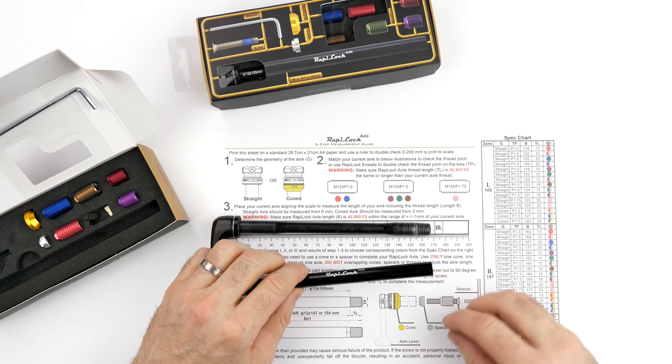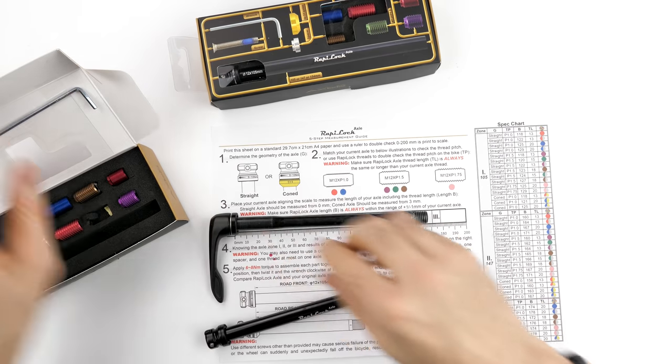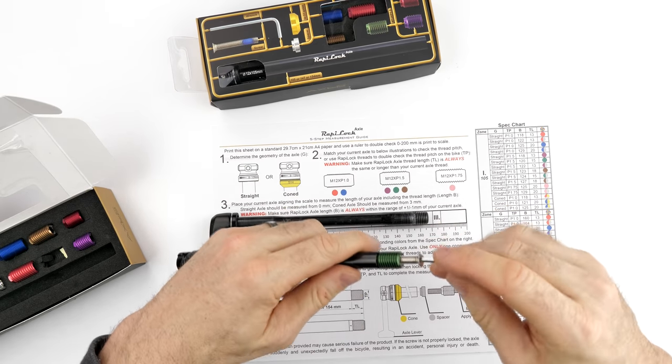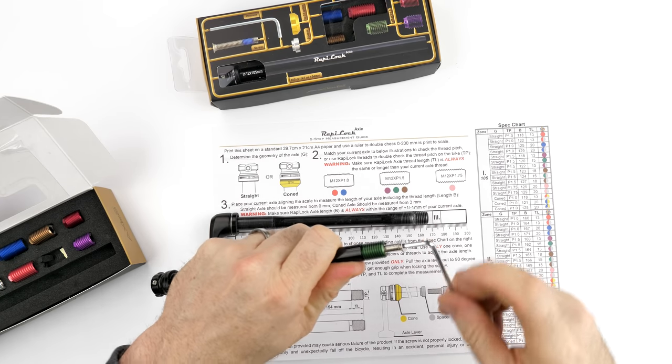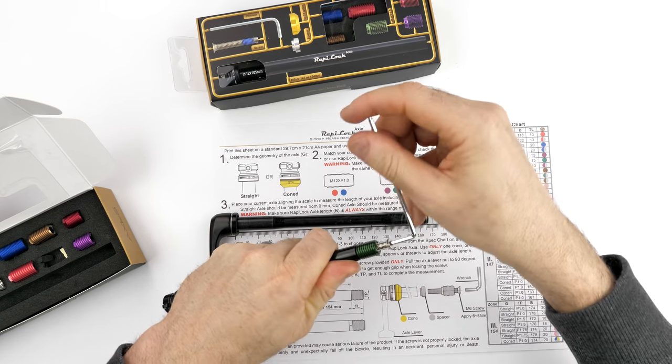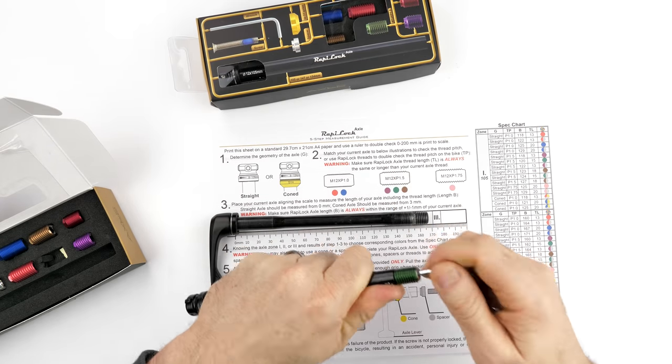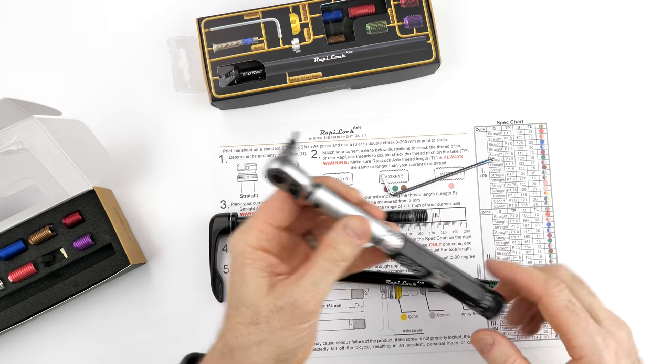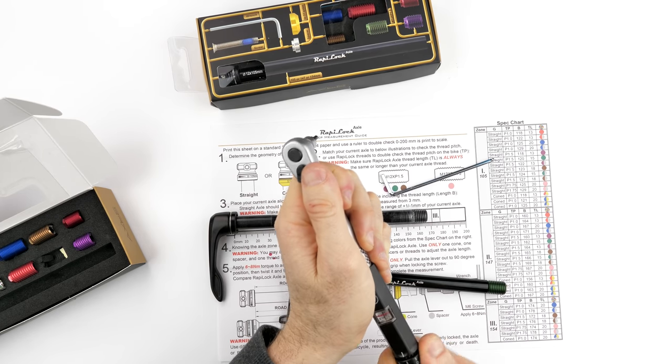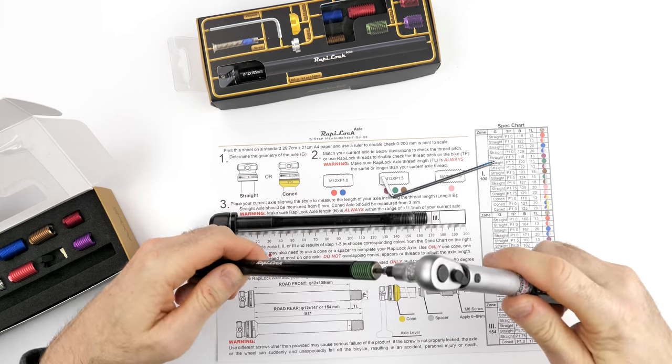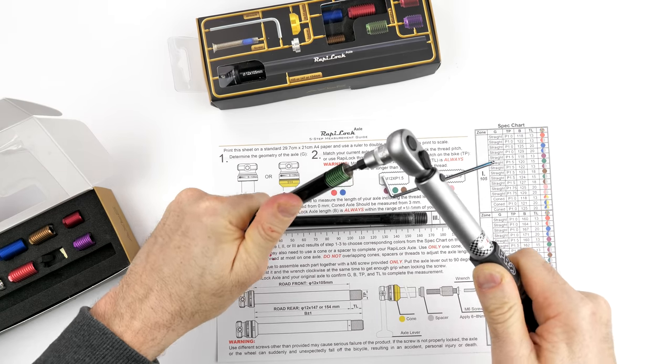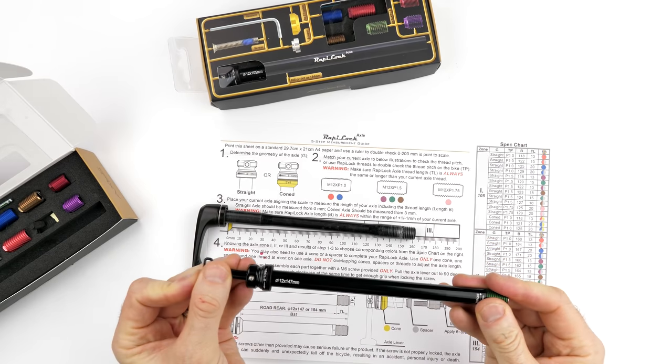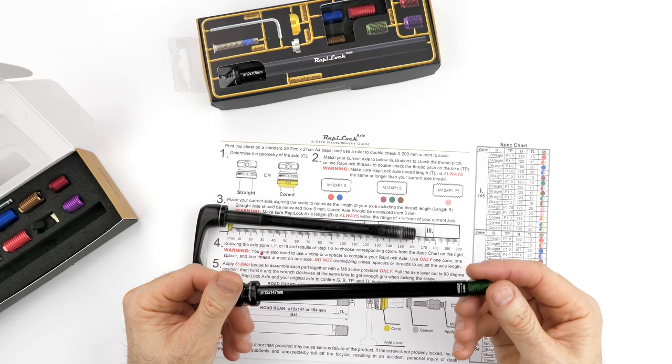Let's get this built. That into there, and they do include a tool to get it most of the way on. There is a torque specification which I will pull out the torque wrench for in just a moment. Okay, so that's on. I'm going to give it a purchase on that torque wrench, 6 to 8 newton meters. That aside, and there we go, my new through axle with the hidden tool to take it on and off. Awesome.